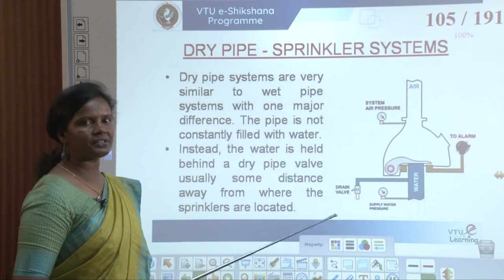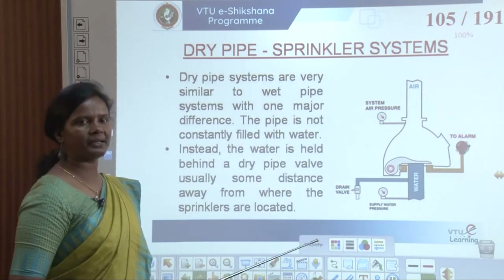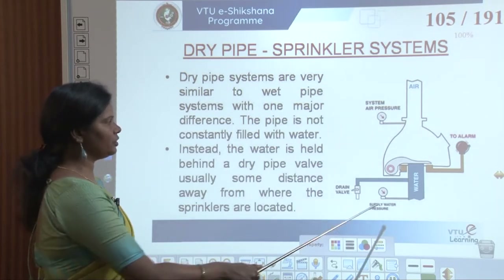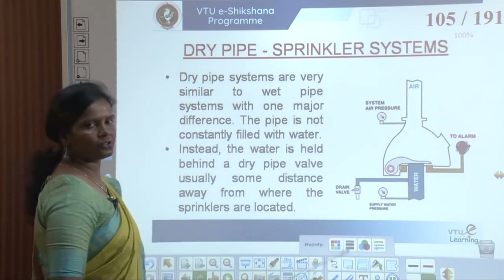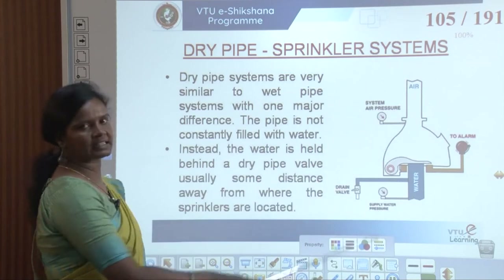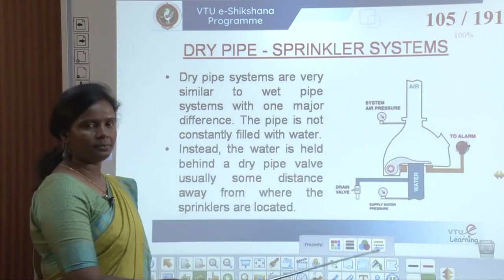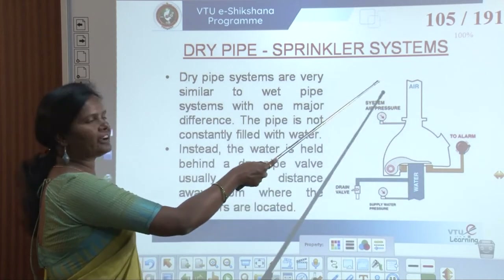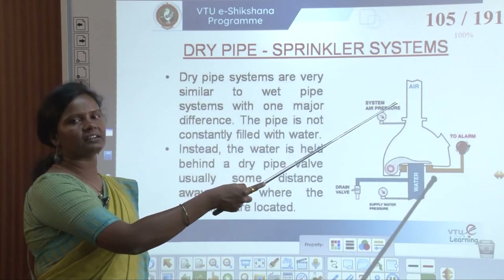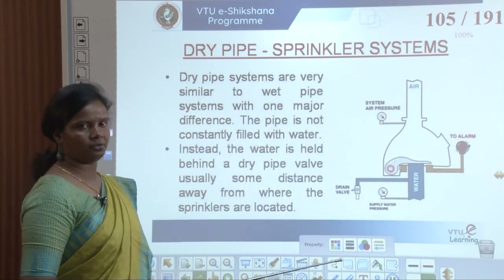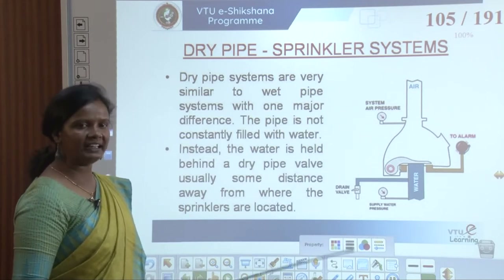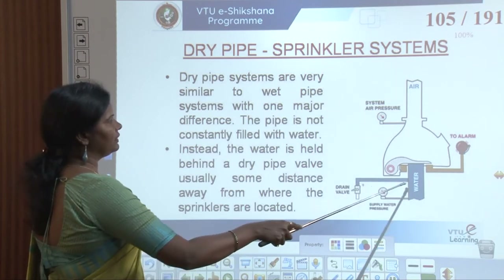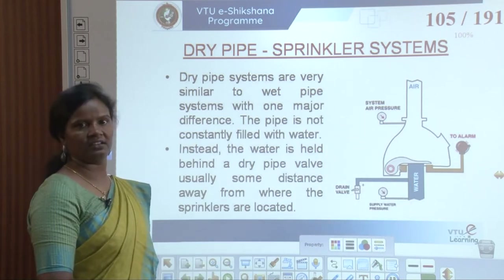Dry pipe systems are very similar to wet pipe systems with one major difference: the pipe is not constantly filled with water. In the diagram, the upper portion is filled with air and the bottom with water — the water supply does not continuously travel inside. Instead, water is held behind a dry pipe valve, stopped at a wall some distance away from where the sprinklers are located.